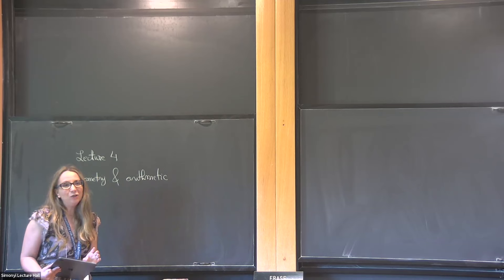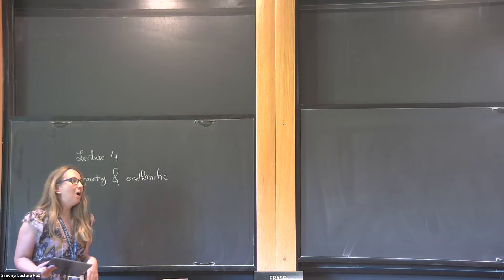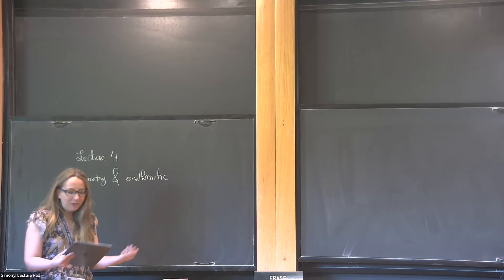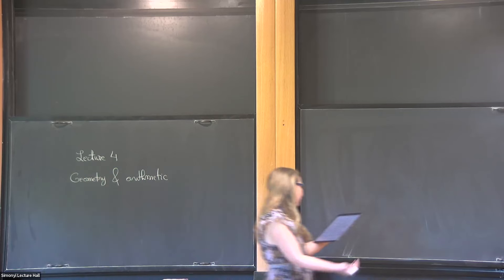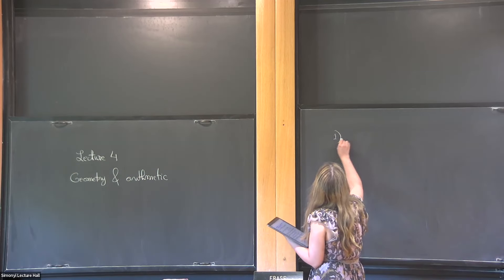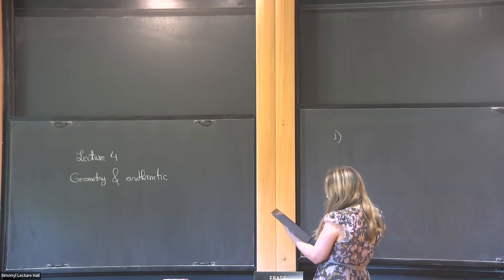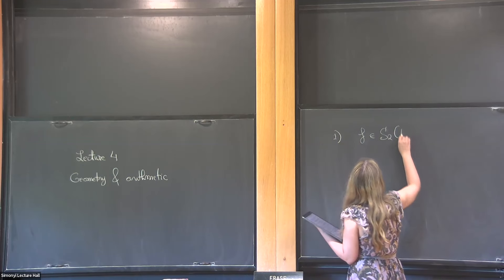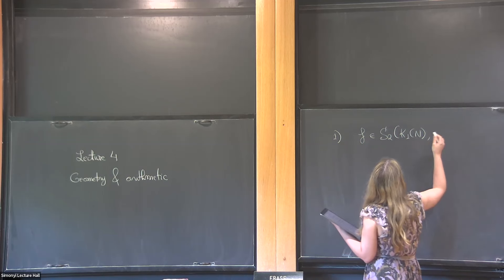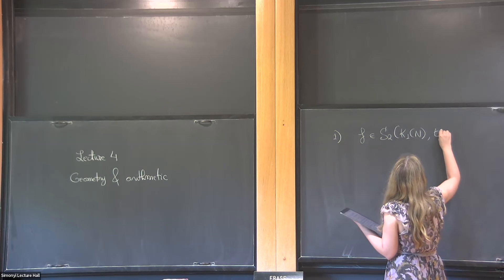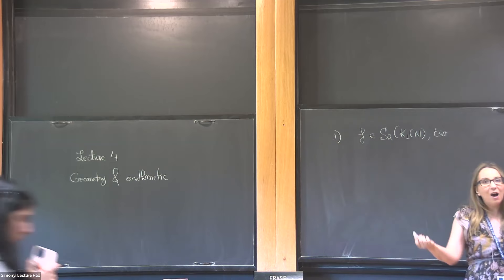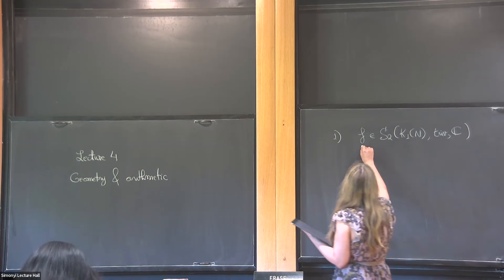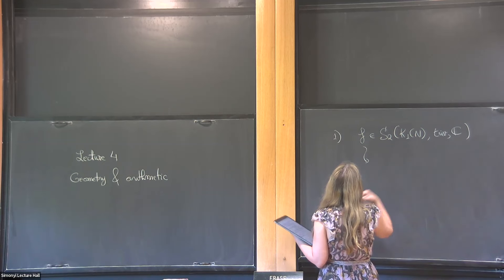And then at the end, I'll try to give you some idea of what's going on in the field today in terms of both geometry and arithmetic. So the first thing is we want to go from a modular form F, and we have this one that we were viewing on K1N with some trivial character, because it's really a K naught — that's the kind of cusp form that corresponds to an elliptic curve. And we want to go from this to a Galois representation.